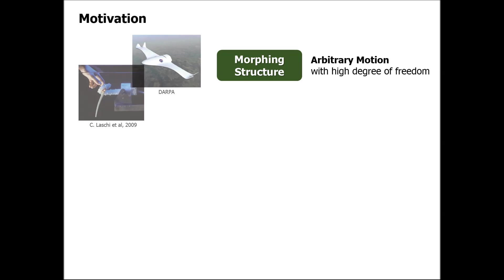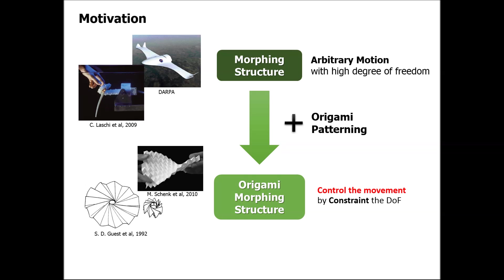Our objective is using this origami concept to make a morphing structure. Generally speaking, a morphing structure has high degrees of freedom. However, if we apply the origami pattern to the morphing structure, we can constrain the degrees of freedom so we can control the movement of the structure. Therefore, the origami structure can be a structural solution to the control problem in morphing structures.